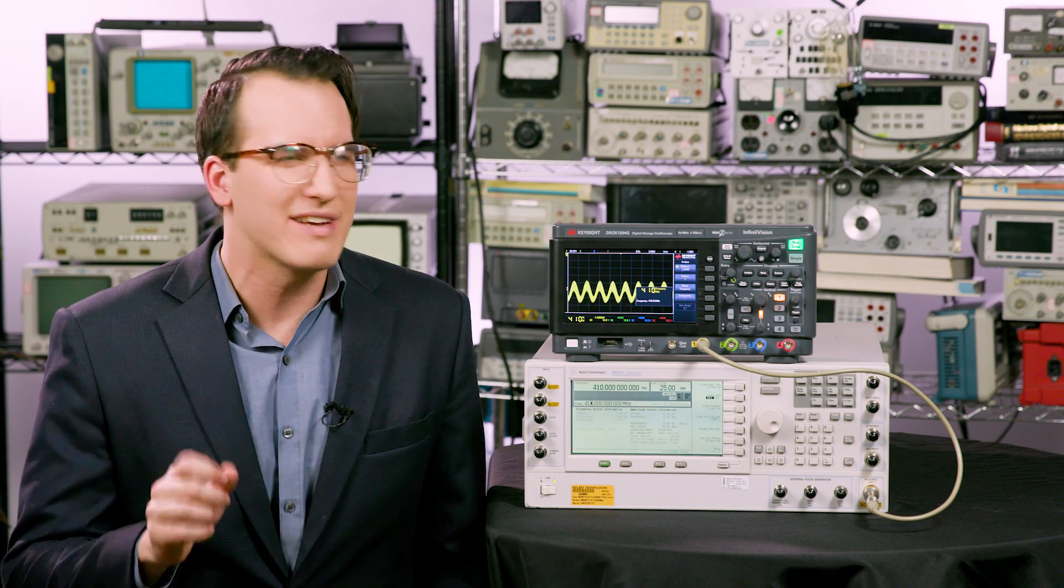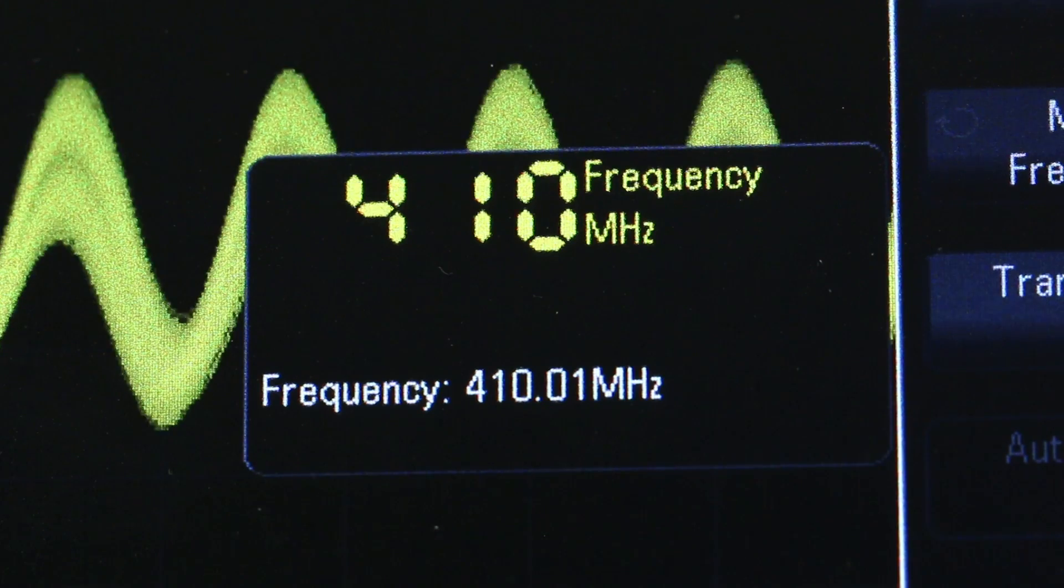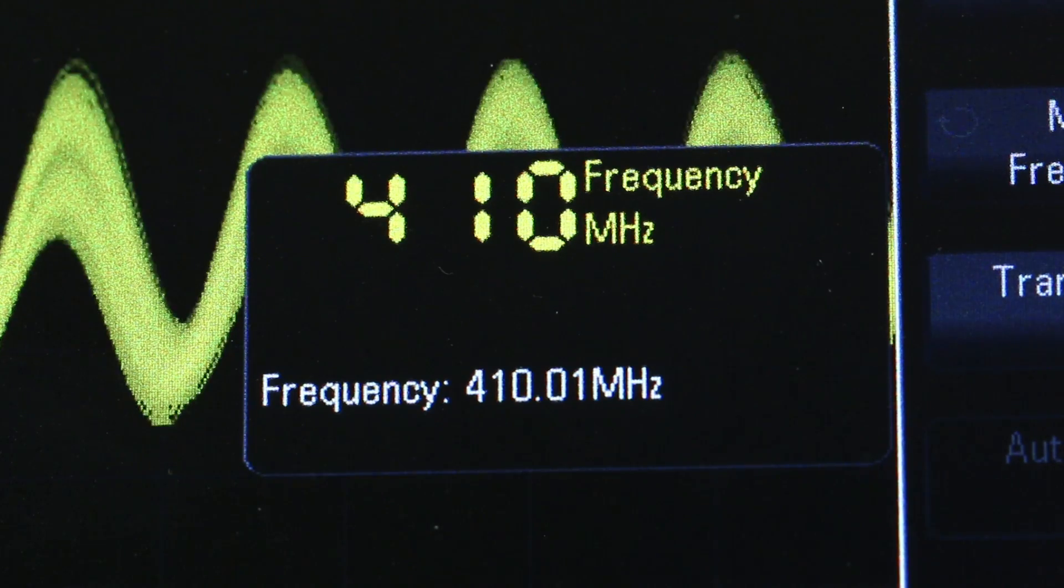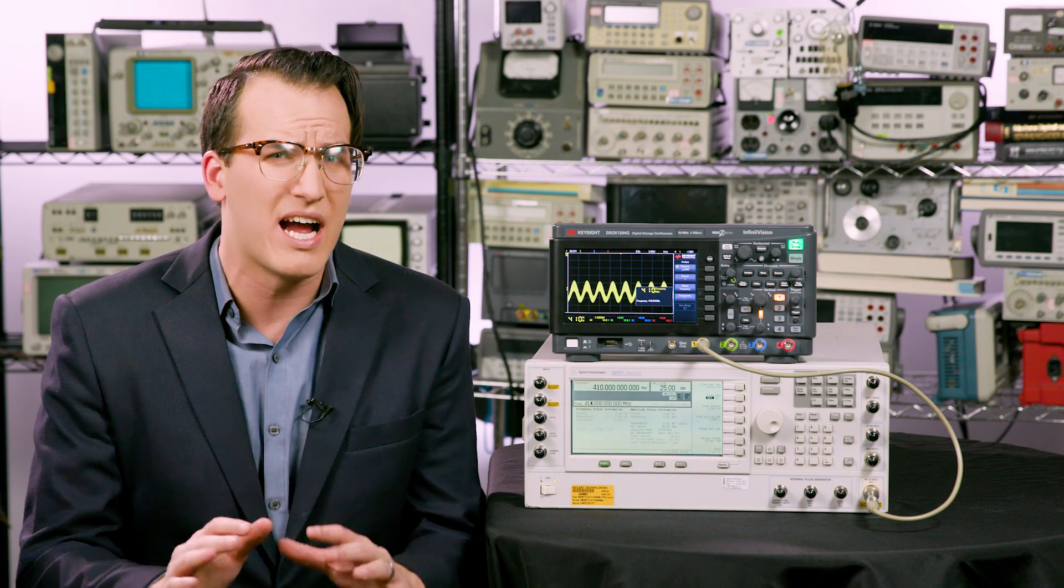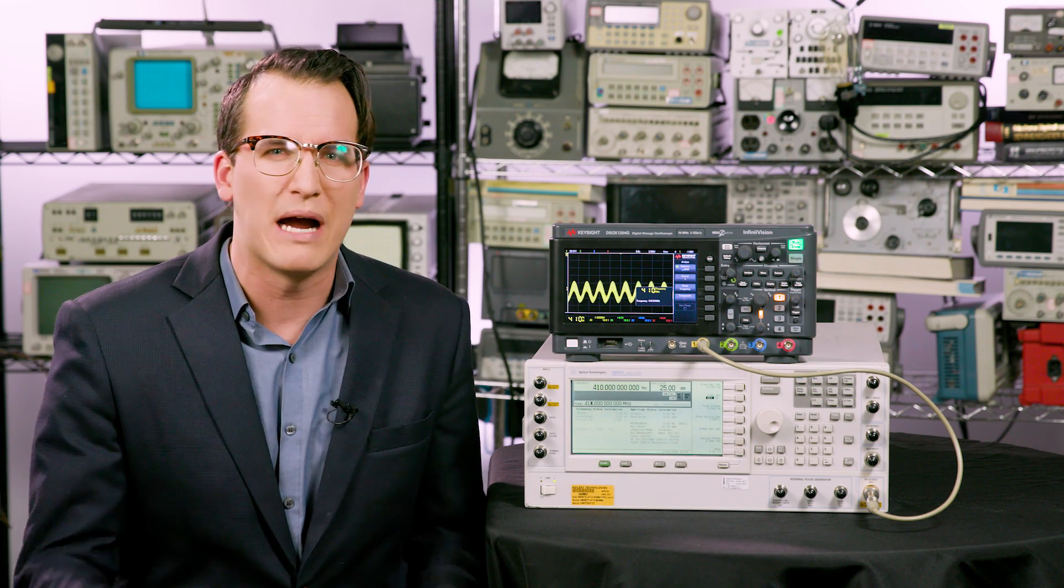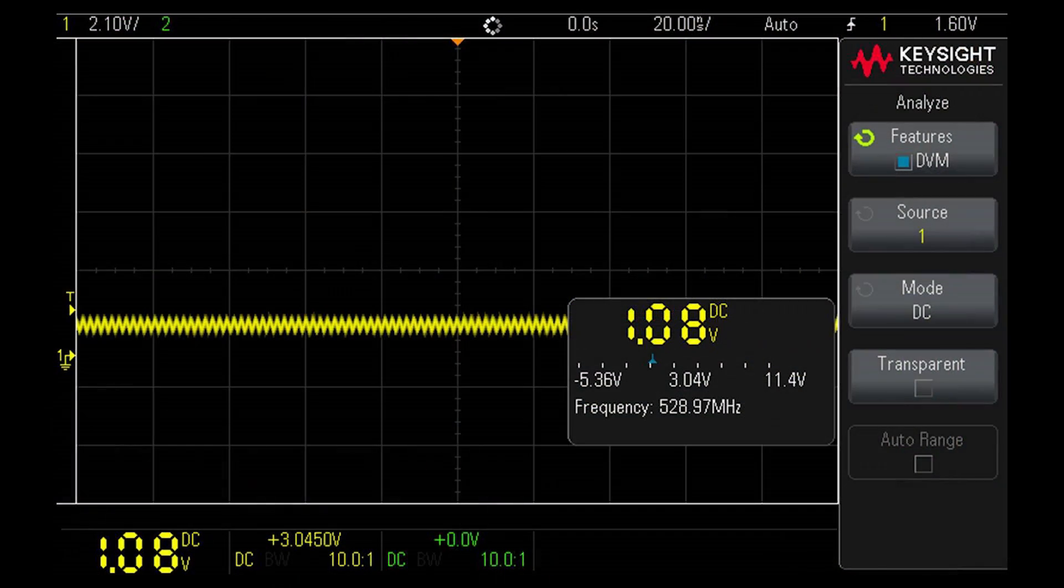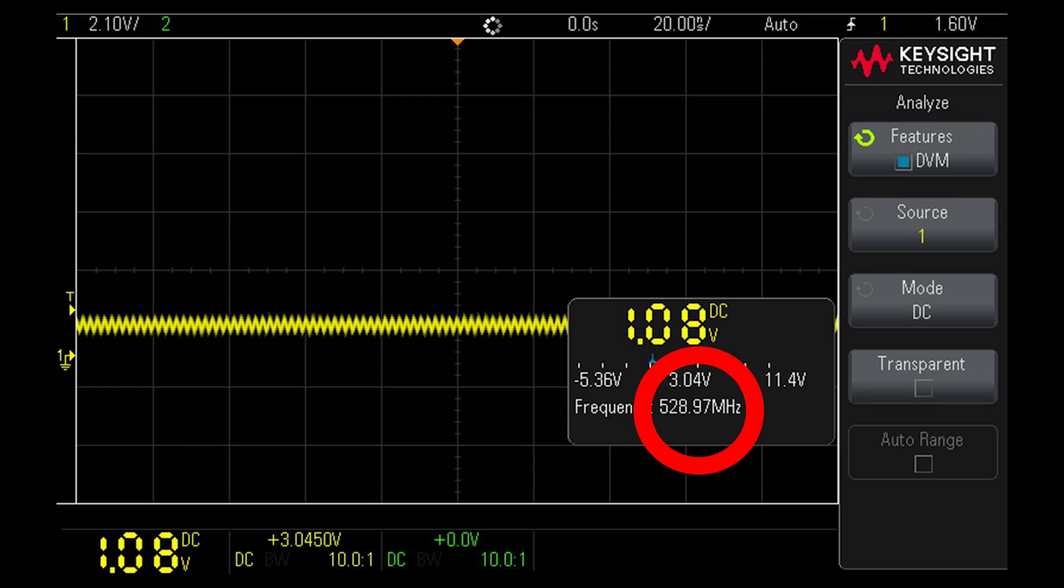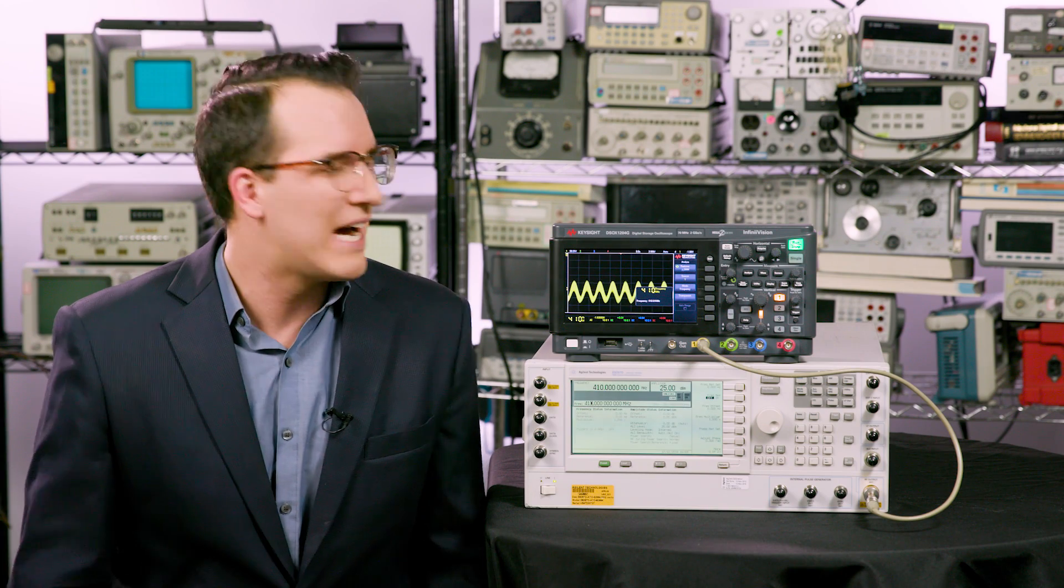So with a little finagling we were able to get 410 megahertz measured on the frequency counter. That is almost six times the bandwidth of the oscilloscope. On another 100 megahertz oscilloscope I was able to get over 520 megahertz. So your mileage may vary from scope to scope but there you have it.